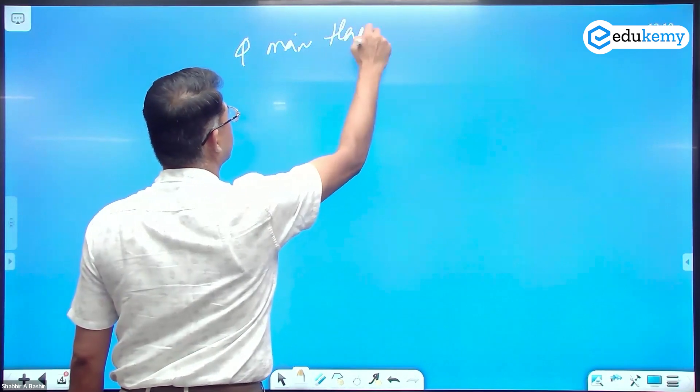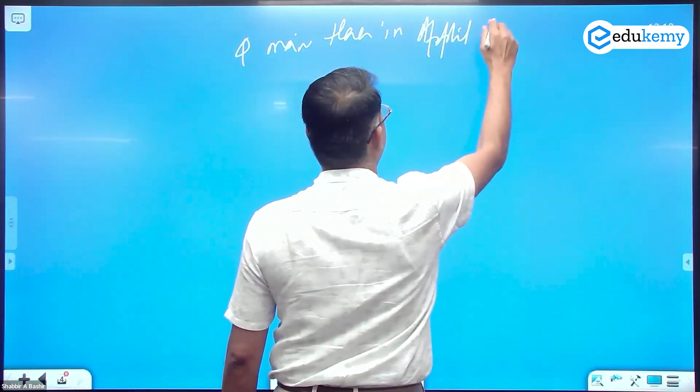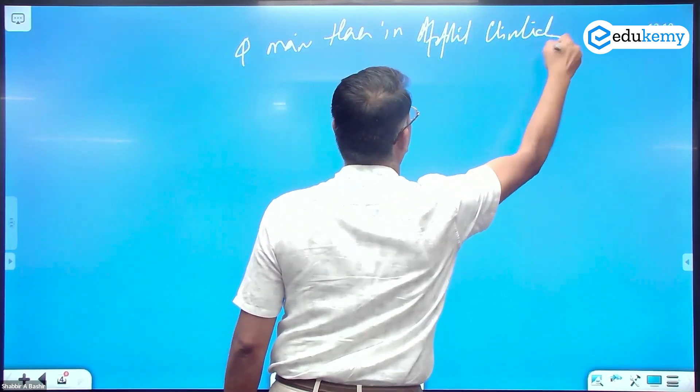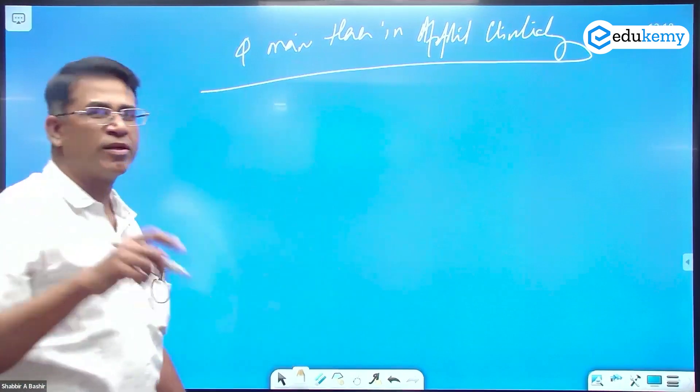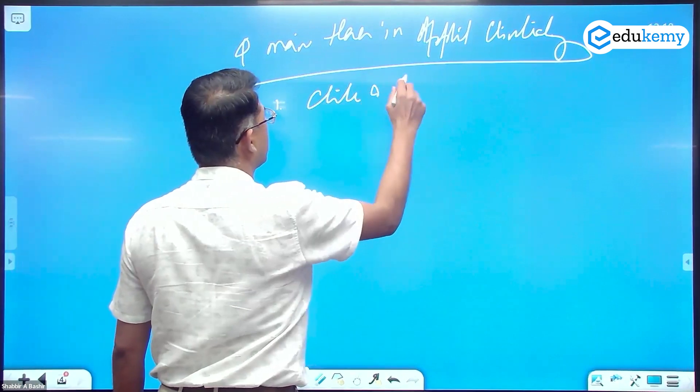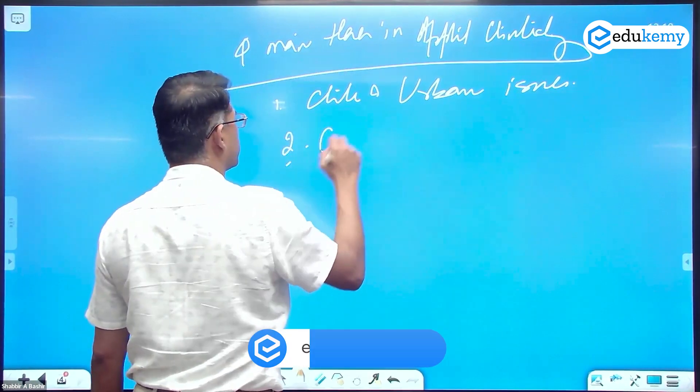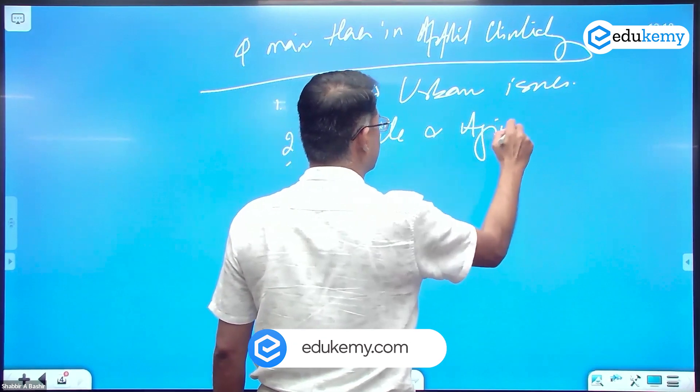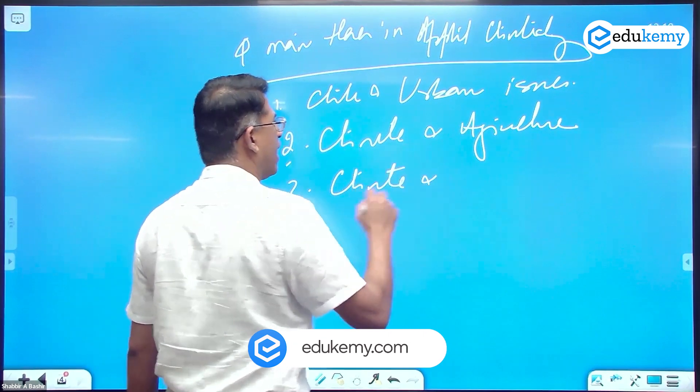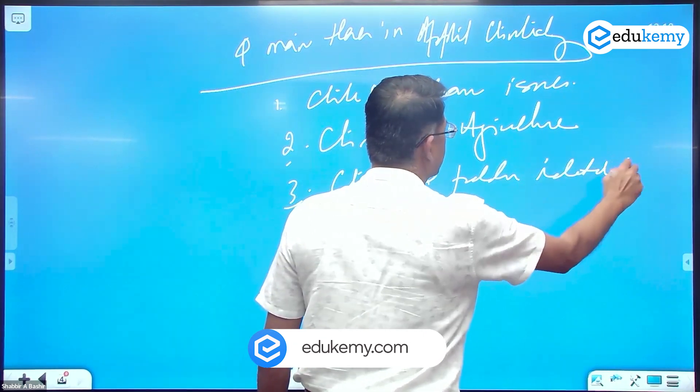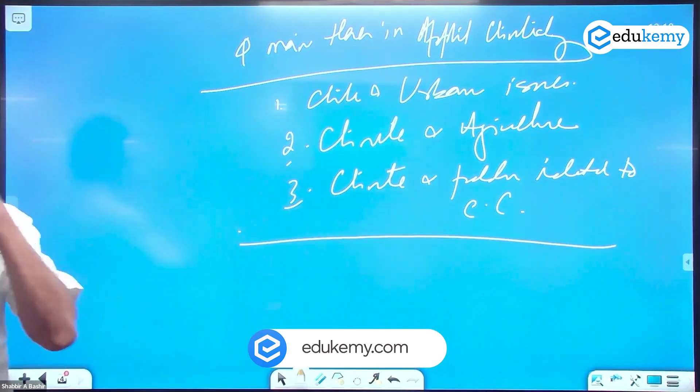There are four main themes in applied climatology. These are the four main themes: one is climate and urban issues, number two is climate and agriculture, three is climate and problems related to climate change.